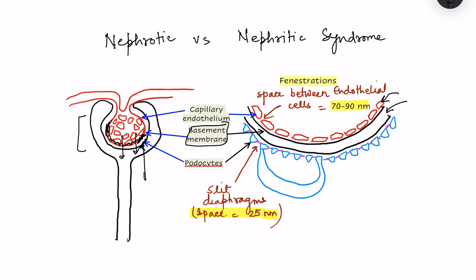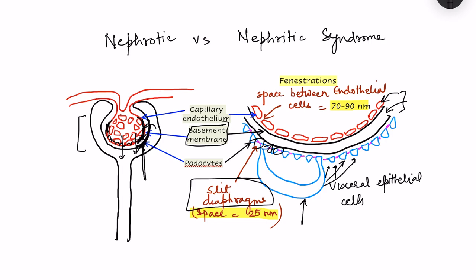One epithelial layer is reflected on the glomerulus forming the filtration barrier, and the other is part of the Bowman's capsule. The layer forming part of the filtration apparatus is the visceral epithelial layer — also known as podocytes. These podocytes have many processes called foot processes, which encircle the capillary layers, leaving spaces that form the slit diaphragm through which filtration takes place.